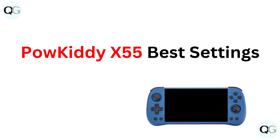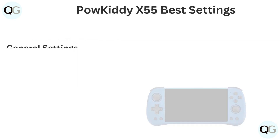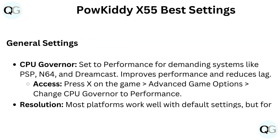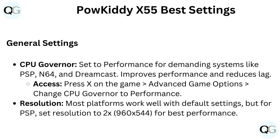Powkiddy X55 best settings. General settings: set CPU governor to performance for demanding systems like PSP, N64, and Dreamcast — this improves performance and reduces lag. To access this, press X on the game, go to Advanced Game Options, and change the CPU governor to performance.